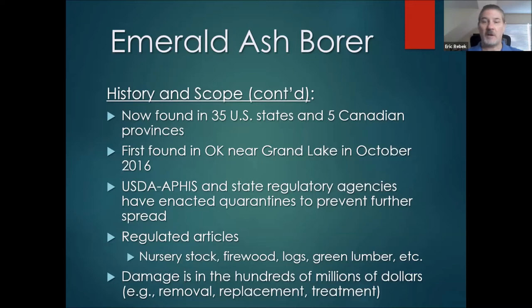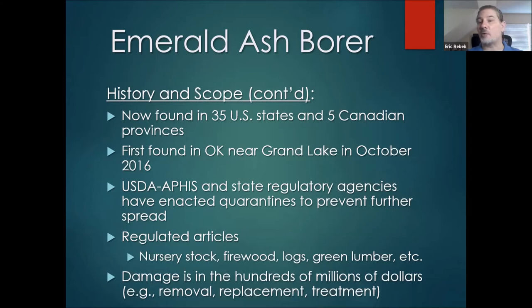From that initial introduction point around Detroit, it has spread radially outward in all directions, affecting 35 U.S. states and further reaching into Canada. Here in Oklahoma, it was first found near Grand Lake in October of 2016, so we've had this for just over four years. USDA APHIS — the regulatory arm for plant pest quarantine — together with state regulatory agencies, has enacted quarantines in most areas where emerald ash borer has been found, trying to prevent further spread outward from those counties.